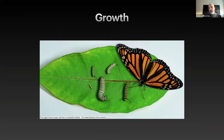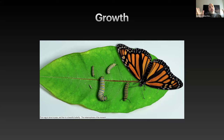You might have encountered this looking in the park, for example, how a butterfly — this is a metamorphosis of a monarch butterfly. You can see that there are different stages and all of these stages are mediated through growth. You can see how the butterfly goes from an egg to a larva, then a pupa, and then a beautiful butterfly.